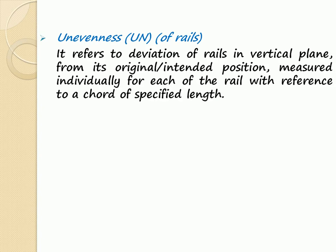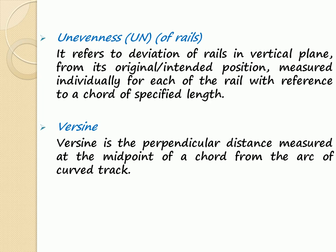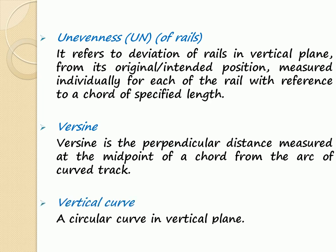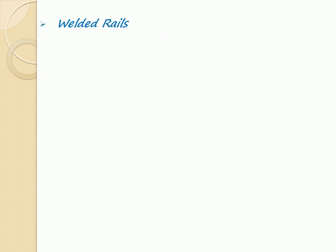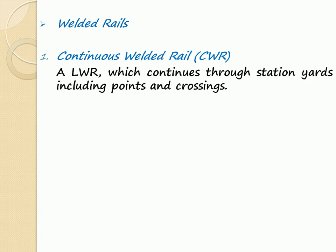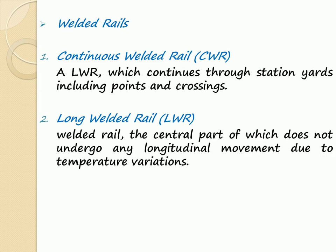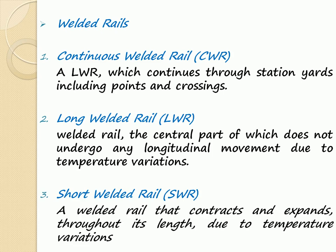Unevenness of Rail: It refers to deviation of rails in the vertical plane from their original intended position, measured individually for each rail with reference to a chord of specified length. Versine: The perpendicular distance measured at the midpoint of a chord from the arc of a curved track. Vertical Curve: A circular curve in a vertical plane. Continuous Welded Rail (CWR): A long welded rail which continues through a station yard including points and crossings. Long Welded Rail (LWR): The central part of which does not undergo any longitudinal movement due to temperature variation. Short Welded Rail (SWR): A welded rail that contracts and expands throughout its length due to temperature variations.